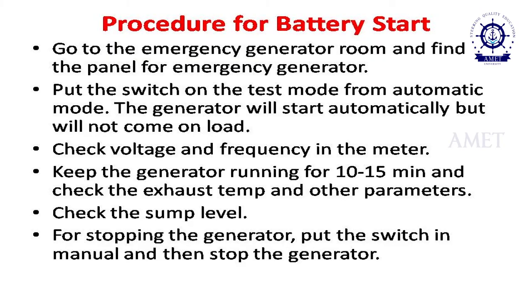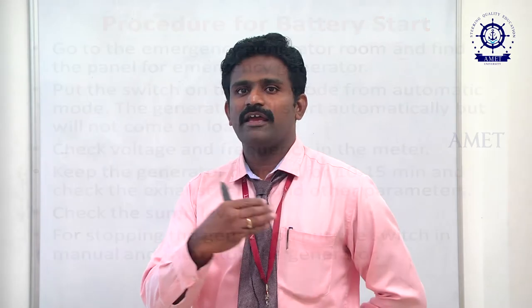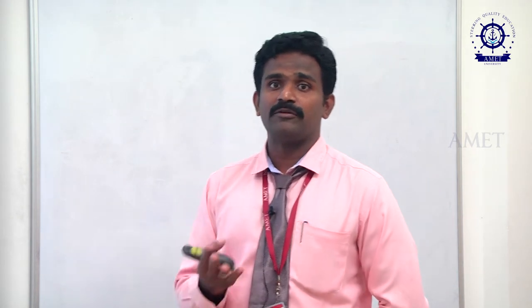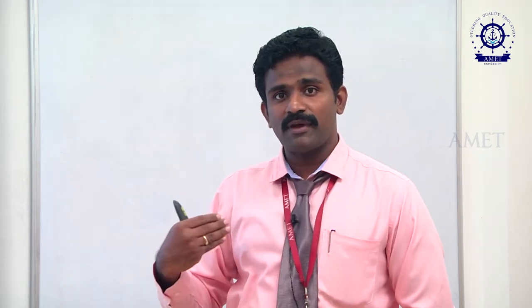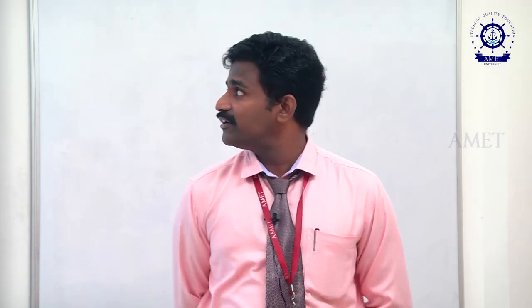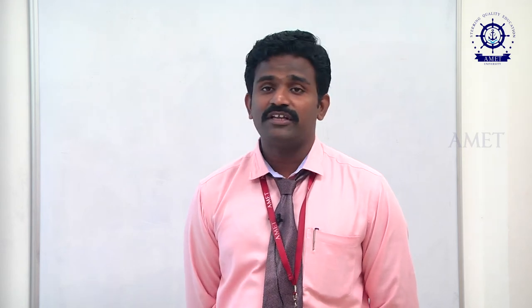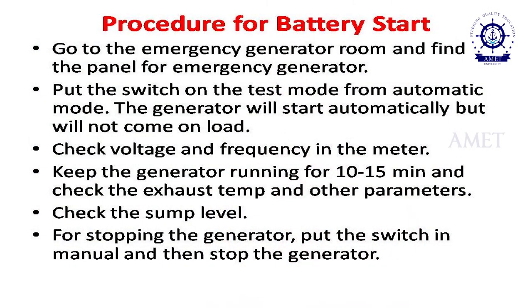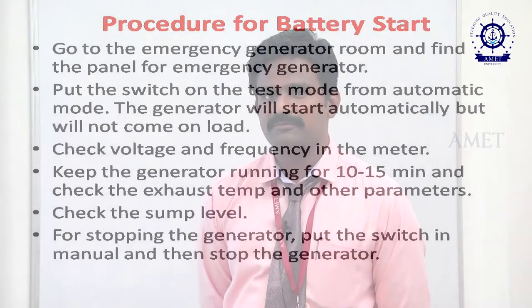First, we look at the battery start procedure. The procedure is very important and must be followed step by step. Go to the emergency generator room and find the panel. Put the switch from automatic mode to test mode. For maintenance testing every Saturday, we switch to test mode from automatic mode. There is a panel — in newer technology there is an LCD touchscreen on the power panel. In the switch panel, you can select automatic mode or test mode.